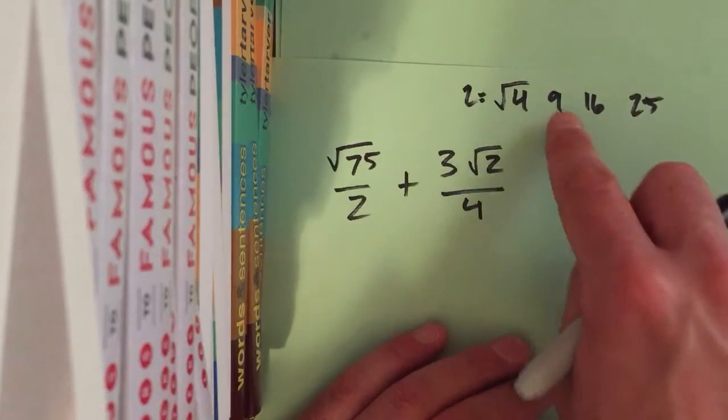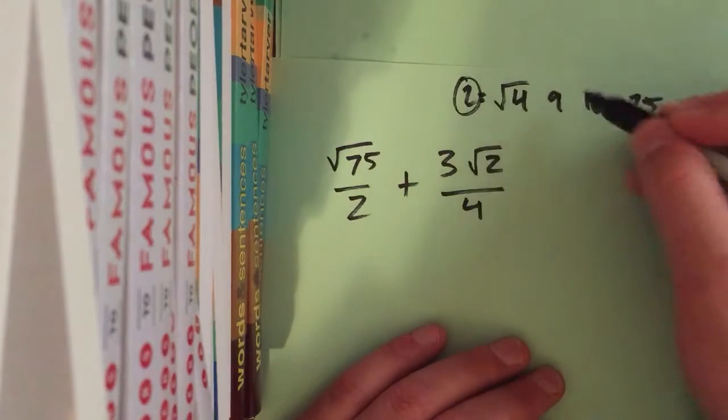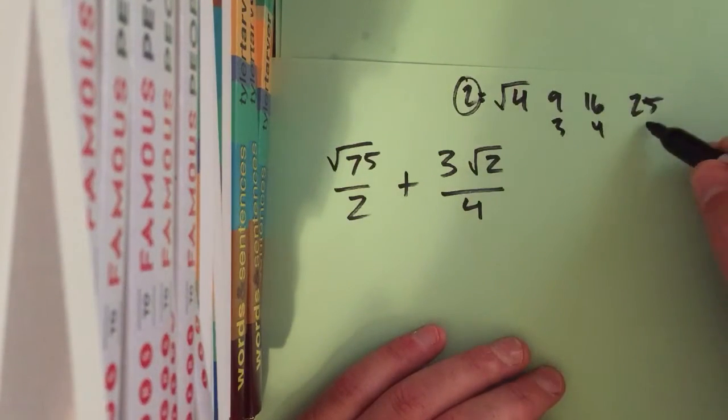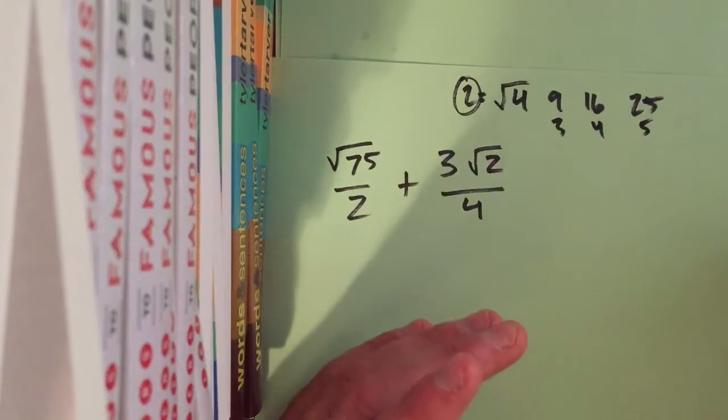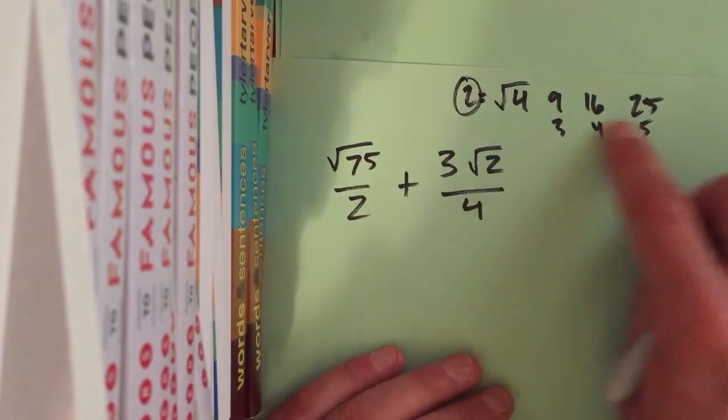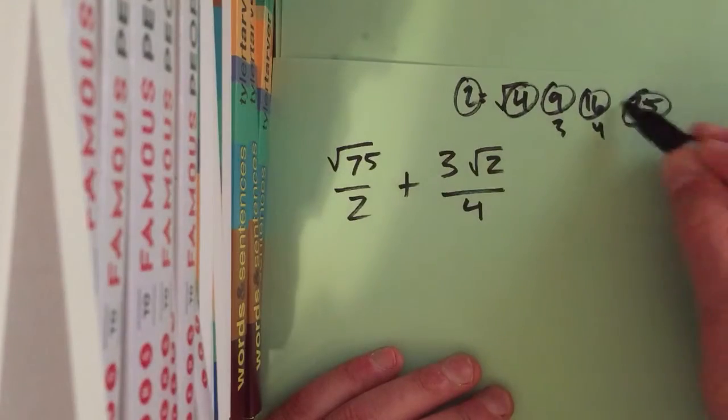These are called perfect squares, which means if you get the square root of them, they equal a regular number. Square root of 9 is 3, square root of 16 is 4, square root of 25 is 5. So, that's what you're trying to do. You're trying to find 4, 9, 16, or 25.